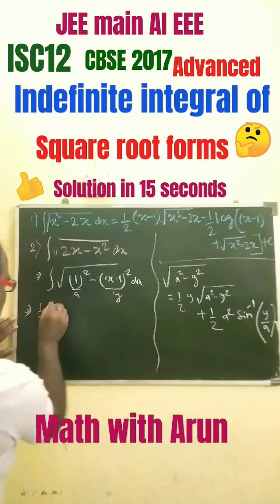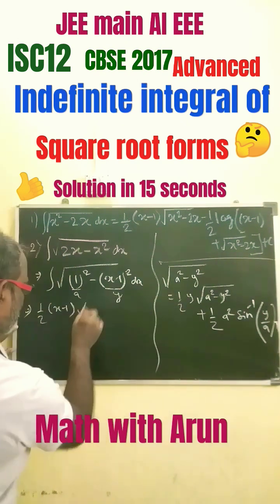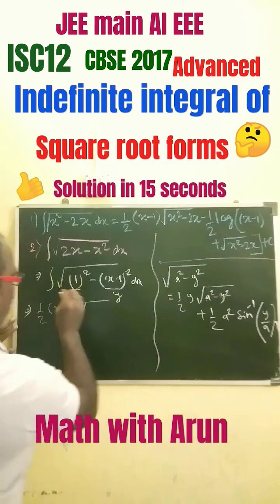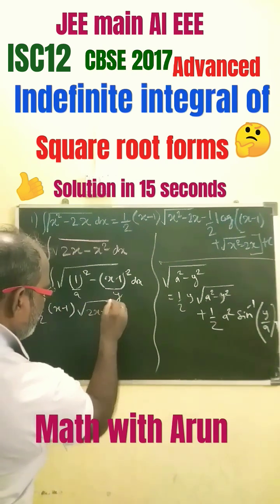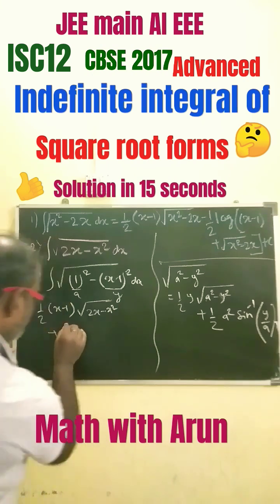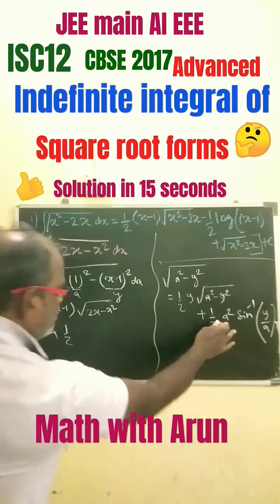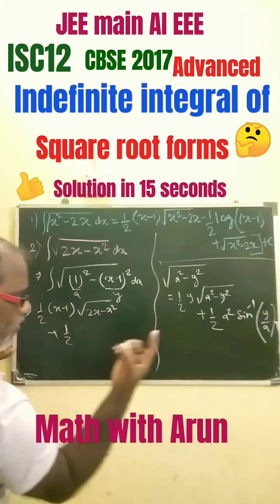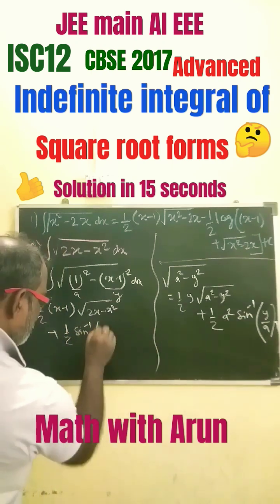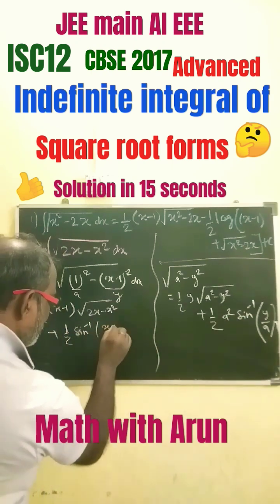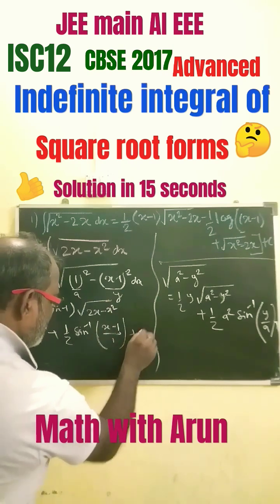Here y equals x minus 1, and the square root of a squared minus y squared is 2x minus x squared, plus half. Here a squared is 1, so a squared equals 1. Then sin inverse of y by a means sin inverse of (x minus 1) by 1, plus c.